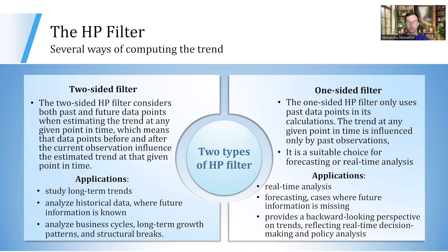There are several ways of computing the HP filter trend. We have the two-sided method and the one-sided filter. The two-sided HP filter considers both past and future data points when estimating the trend at any given point in time, meaning the data points before and after the current observation influence the estimated trend. This is useful when studying long-term trends and when analyzing historical data with information about both future and past observations — pertinent when analyzing business cycles, long-term growth patterns, and structural breaks.